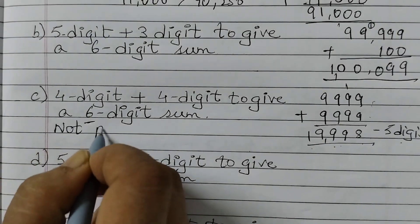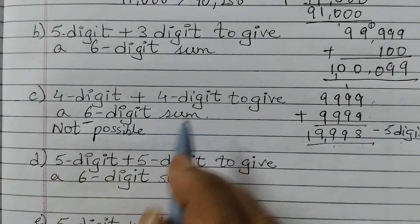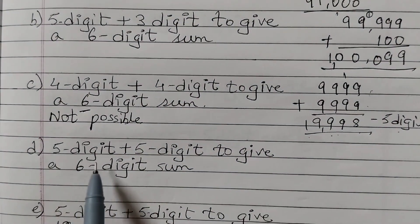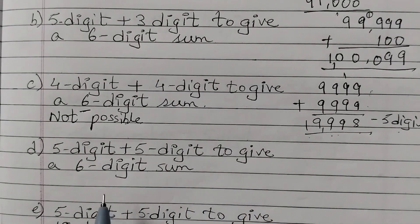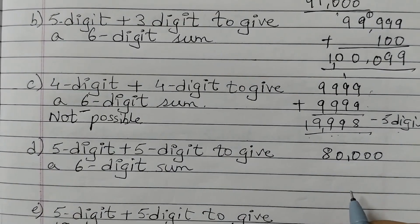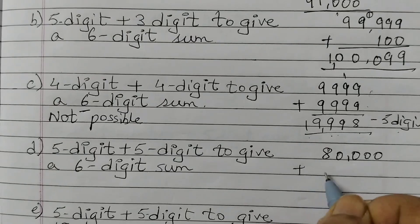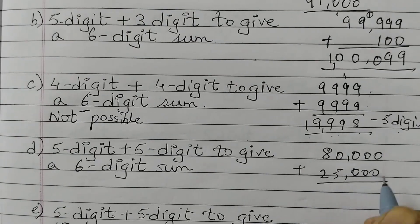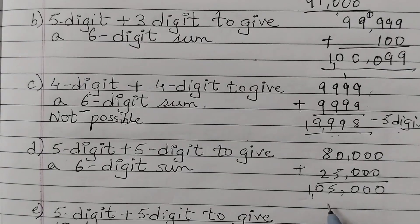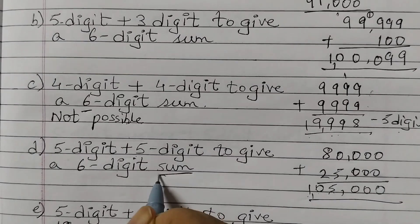Here you write "not possible" — to get a 6-digit sum by adding two 4-digit numbers. Next, D: 5 digit plus 5 digit to give a 6 digit sum. We add two 5-digit numbers. Take a big number — say 80,000 — I'm adding a lot of zeros because it makes the task easier — plus 25,000. Both are 5 digits. When we add them we get a 6-digit sum.